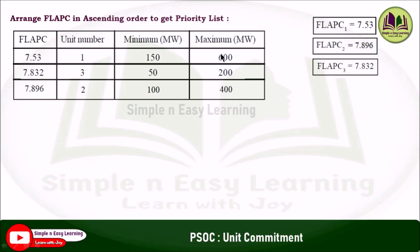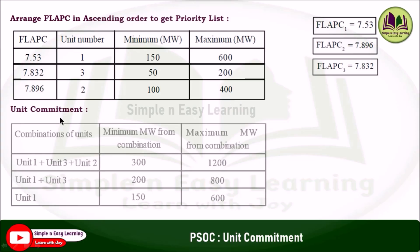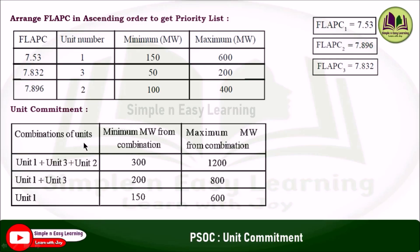The minimum and maximum generation limits for each unit in priority order are: unit 1 is 150–600 MW, unit 3 is 50–200 MW, and unit 2 is 100–400 MW. Now we form the combinations for unit commitment based on priority. The first priority is unit 1, the second priority is unit 3, and the third priority is unit 2.